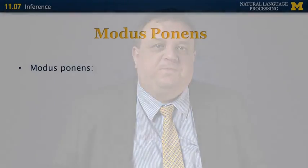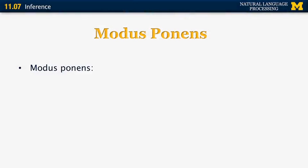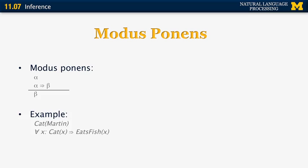We're now going to switch to the next topic: inference. The simplest form of inference is using a method called modus ponens. The way it works is that if you have a statement alpha, and we also know that alpha implies beta, you can infer that beta is true. For example, if we know that Martin is a cat, and we know that for all X, cat(X) implies eats_fish(X), we can infer that Martin eats fish.